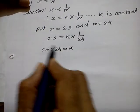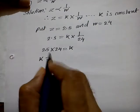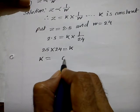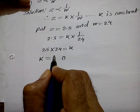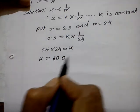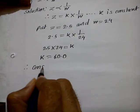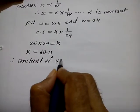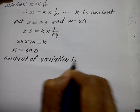Many of you don't know how to find out the product of 2.5 and 24. It's simple: multiply 25 by 24. 25 times 4 is 100, carry 10. 25 times 2 is 50, plus 10 is 60. Move the decimal one place to the left. Therefore K is equal to 60. The constant of variation is 60.